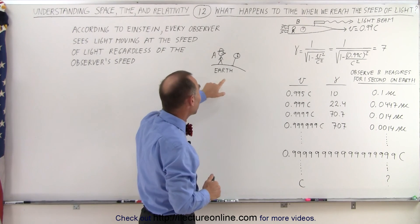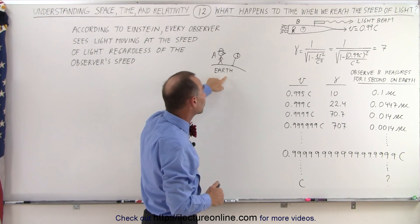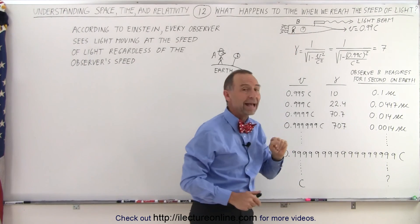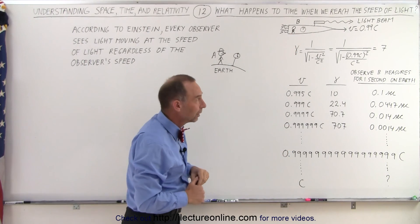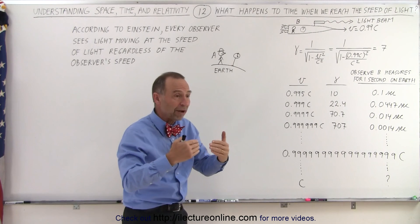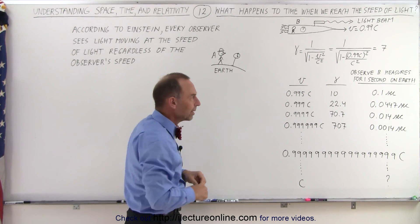Now what that means is that for every 7 seconds passing on the Earth, only 1 second passes on the spaceship, which means that the spaceship can travel much greater distances in a much shorter time.